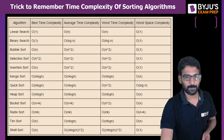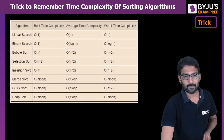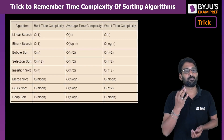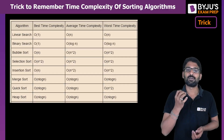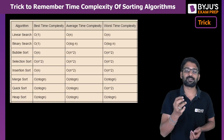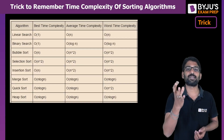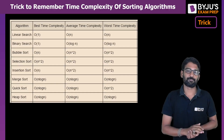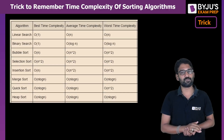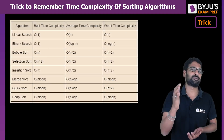What are they? Linear search, binary search, bubble sort, selection sort, insertion sort, merge sort, quick sort, heap sort. So six sorting algorithms you have to remember, along with linear and binary search.